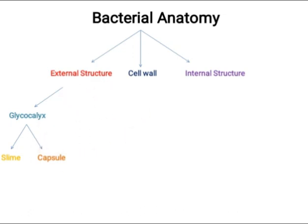Beyond that, bacteria have different external structures, including flagella. Flagella help bacteria with movement. When bacteria are in an adverse environment, flagella help them move toward a suitable environment. Based on flagella, we have different classifications: atrichous, monotrichous, lophotrichous, amphitrichous, and peritrichous bacteria.